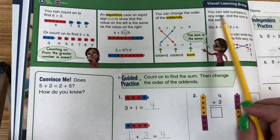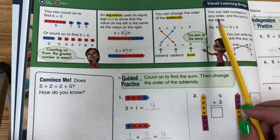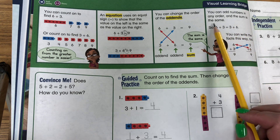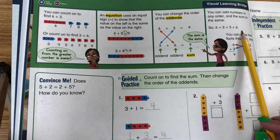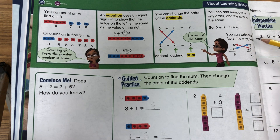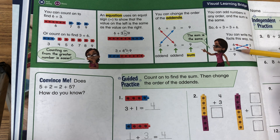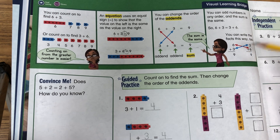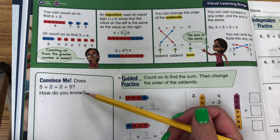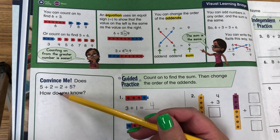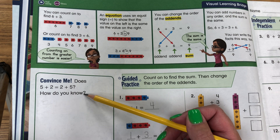Visual learning bridge. You can add numbers in any order, and the sum is the same. So, 6 plus 3 equals 3 plus 6. You can write the facts this way too — they can be on top of each other in a line. 6 plus 3 equals 9 is just the same as 3 plus 6 equals 9.